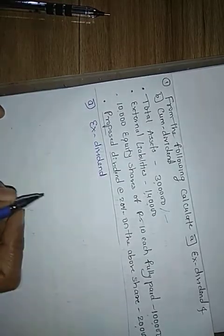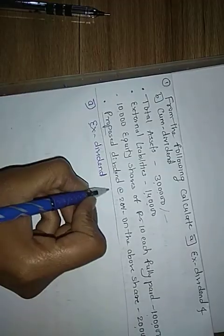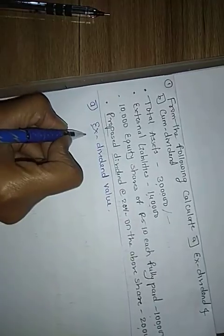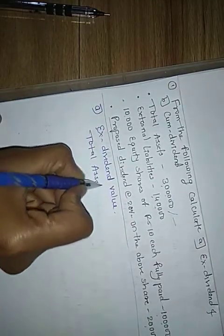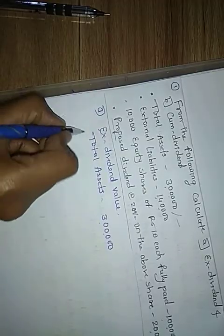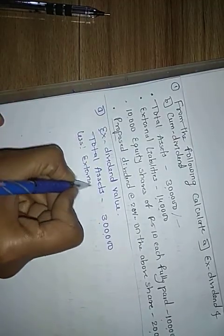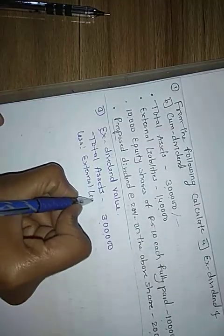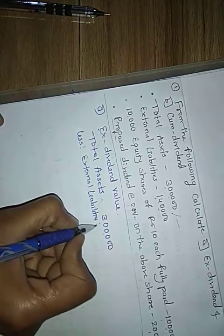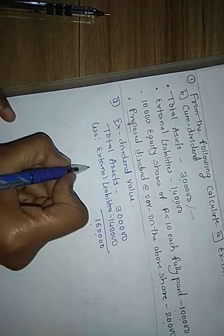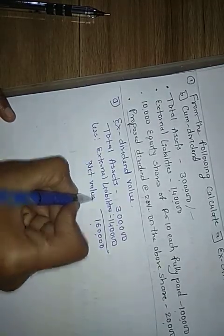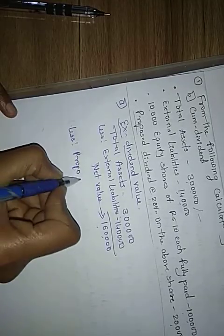X-dividend does not include the dividend value, which is why its name is x-dividend. So the solution begins with total assets that is rupee 3 lakh. Make columns for particulars and rupees. Then, less external liabilities — that is rupee 1 lakh 40,000 — giving us rupee 1 lakh 60,000 as the net value.